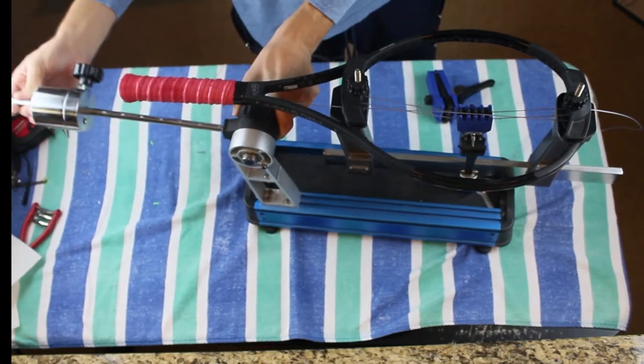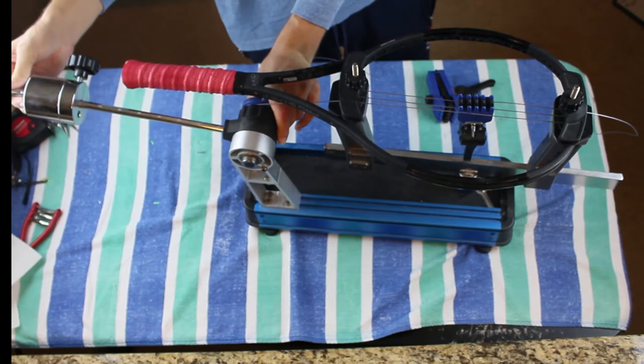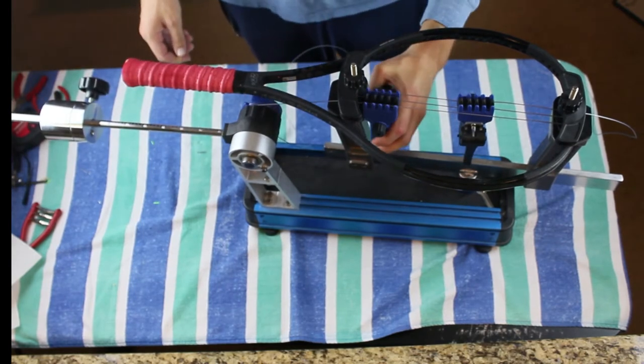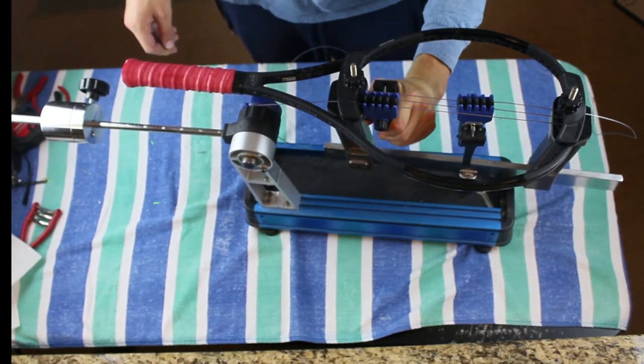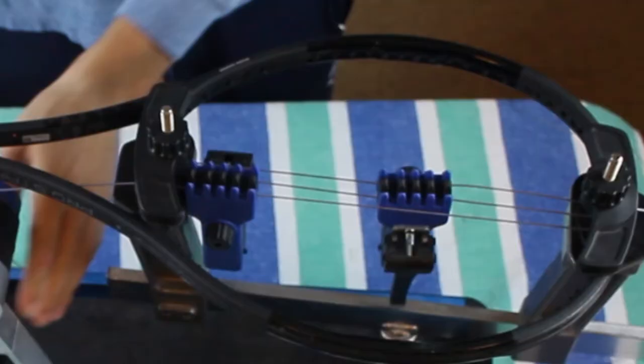And what this does, it tensions that one and a half strings from that tensioning bar all the way to where that center clamp is. And the other part of that, or where the other string is on the other side of that clamp, it's not going to be tensioned. We'll do that next.